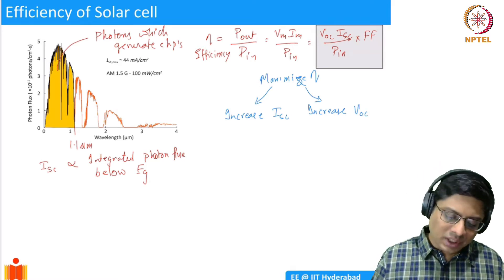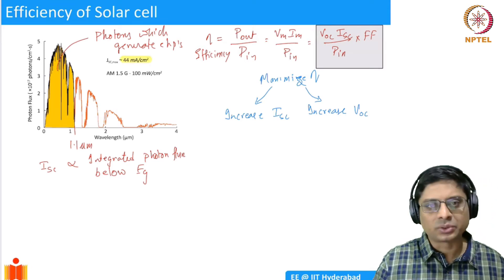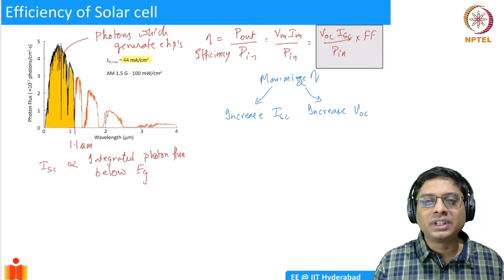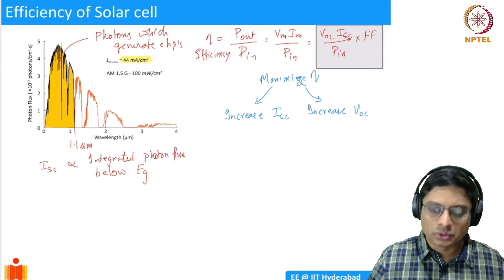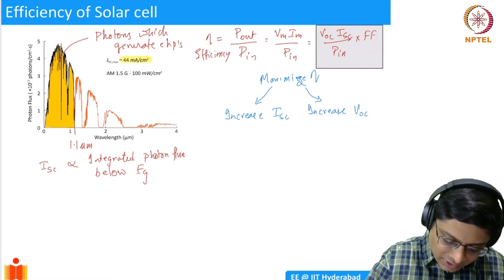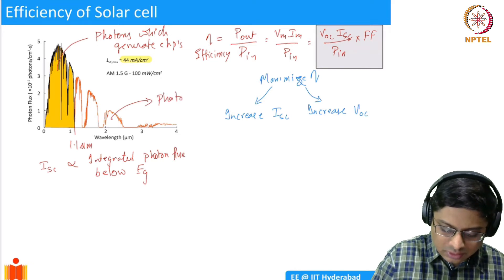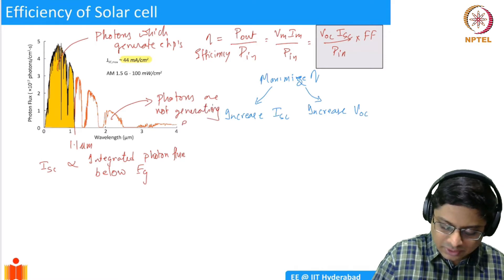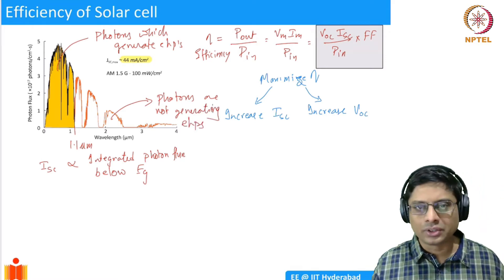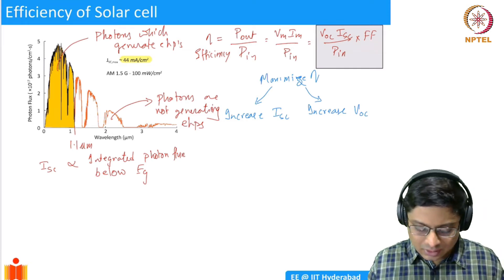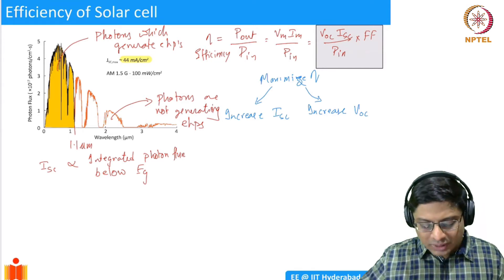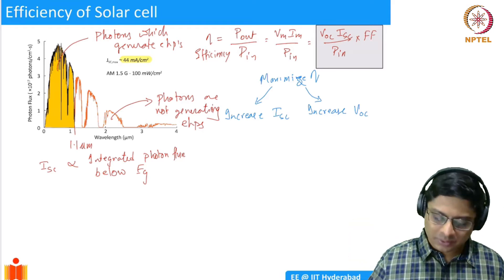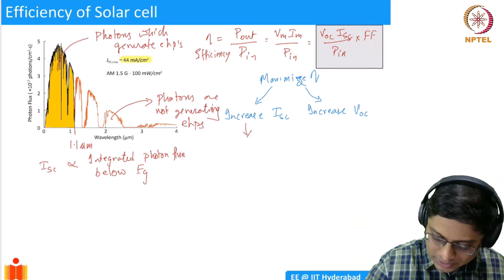For silicon this integrated photon flux works out to about 44 milliamps per centimeter squared. To increase the short circuit current, we need to integrate more photons. Currently, low-energy photons above the bandgap wavelength are not generating electron-hole pairs and so are not contributing to current. One way to improve efficiency would be to reduce the band gap.